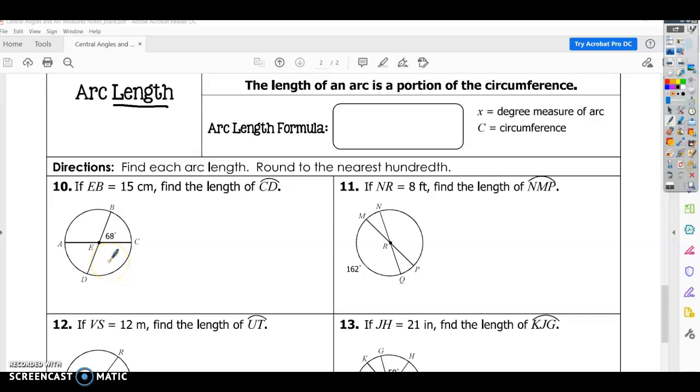So the arc length formula is length equals x, which is the degree measure of the arc, times your circumference, divided by 360, because 360 is the total measure of the entire circle.